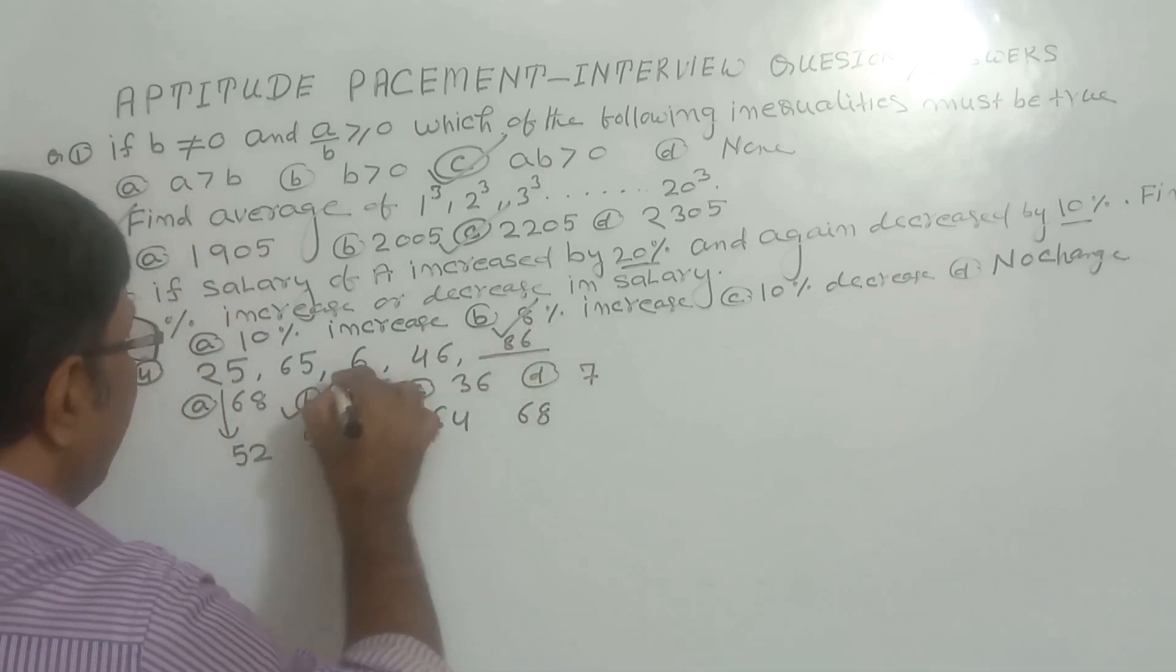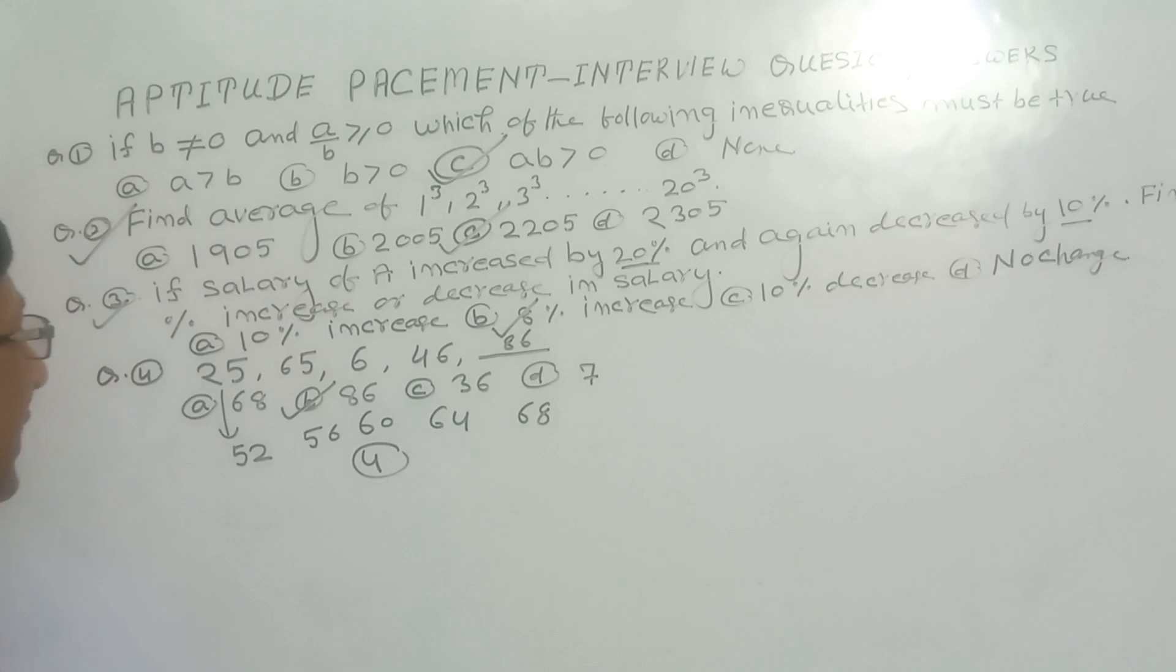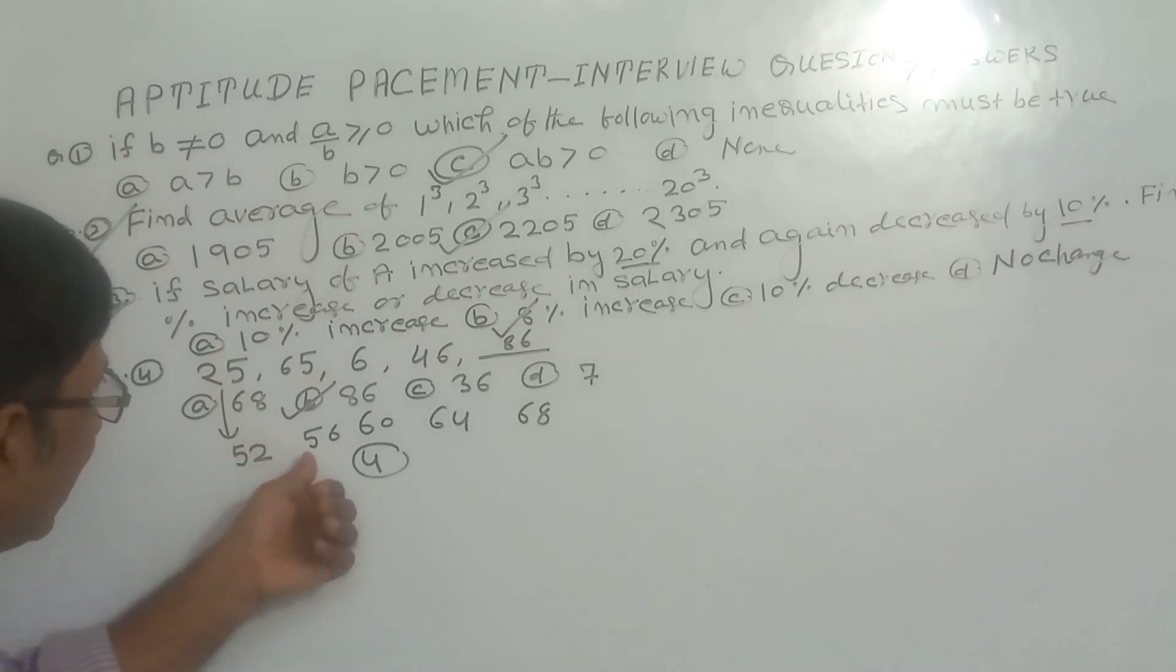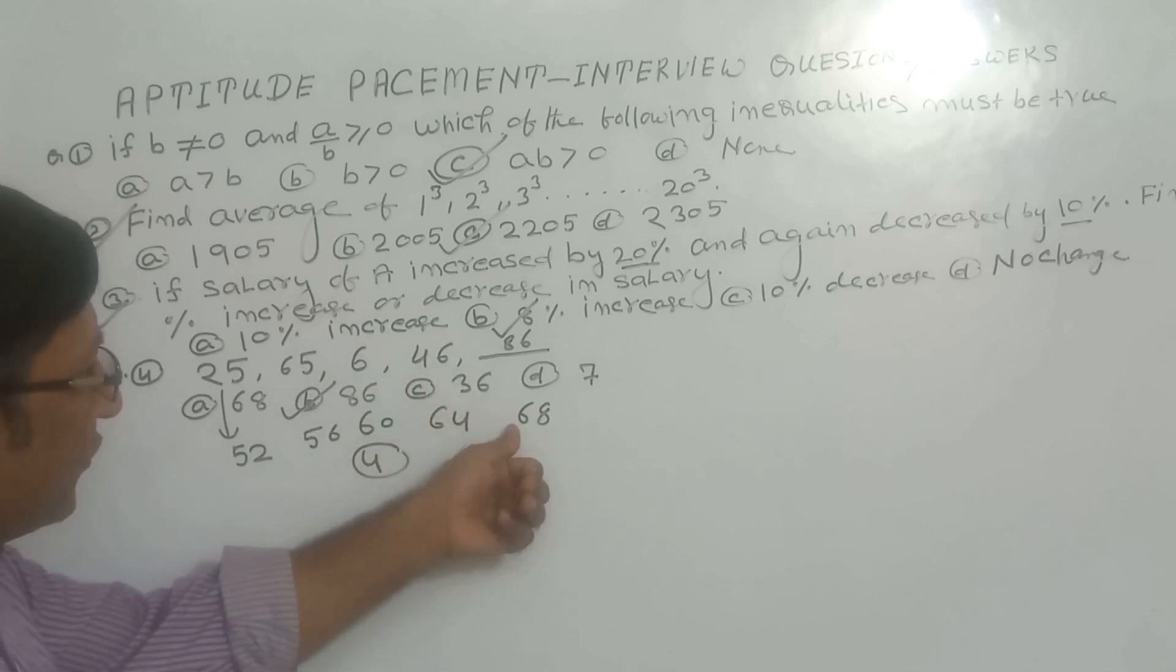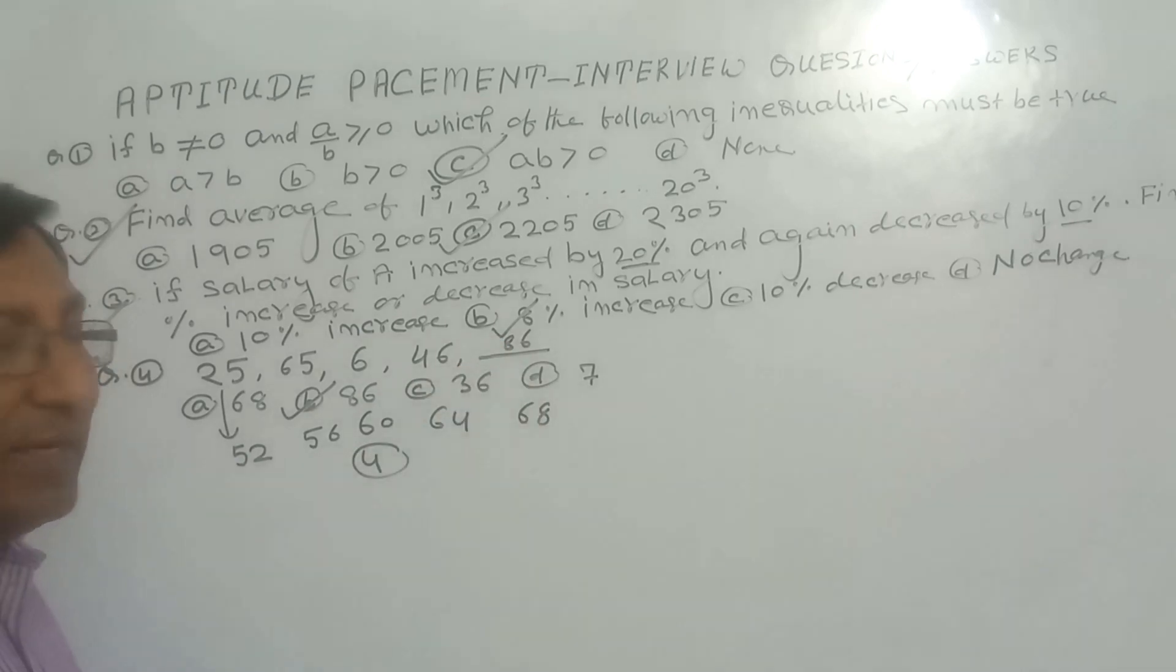Again you see, this is 25, reverse of this number is 52. When we add 52 plus 4, this is 56, reverse is 65. Again 56 plus 4 is 60, reverse is 6. 60 plus 4 is 64, reverse is 46. Now 64 plus 4 is 68, reverse is 86. So our correct answer is 86.